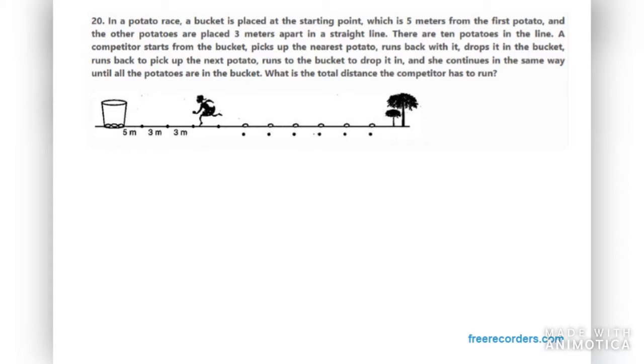We need to find the total distance the competitor has to run. Now for the first potato, it is at a distance of five meters from the bucket and she has to run back again to the bucket. That means she is traveling five meters into twice. So the distance covered to pick up the first potato and put it in the bucket will be 5 × 2, that is 10 meters.